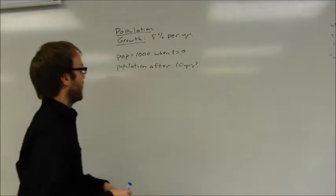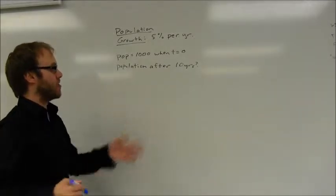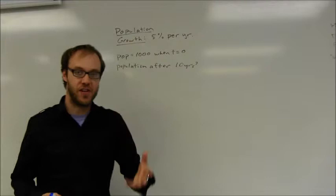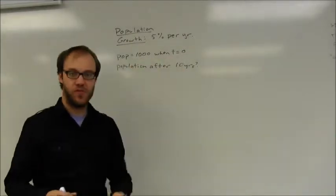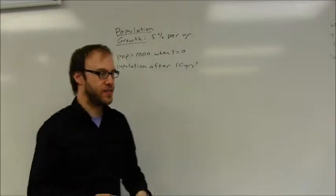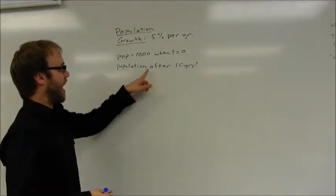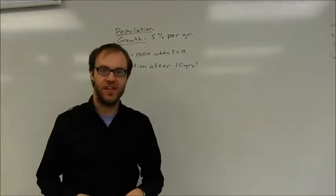What I'm told here in this example is that in some particular place the population growth occurs at 5% per year. The population is a thousand when t equals zero. So the first year that this calculation is made that's what's happening. I'd like to find the population after 10 years.